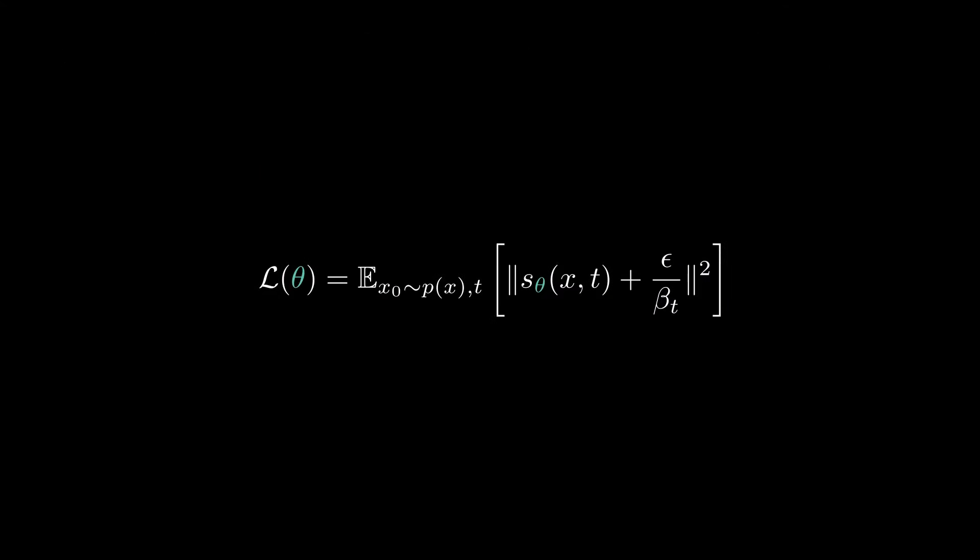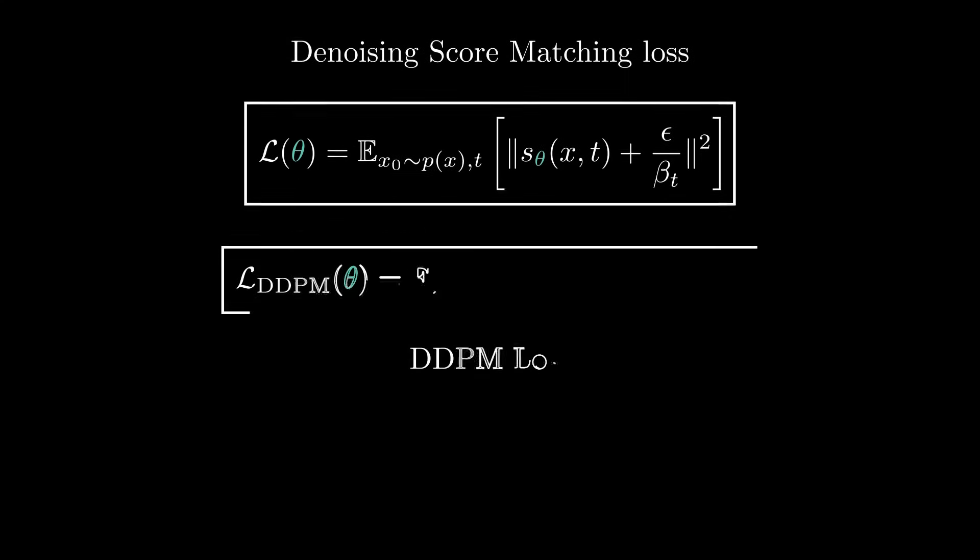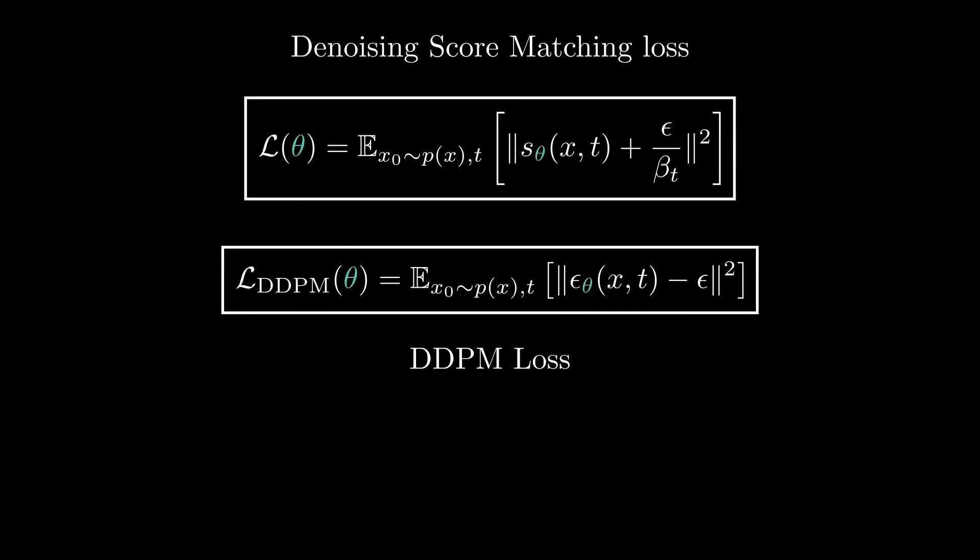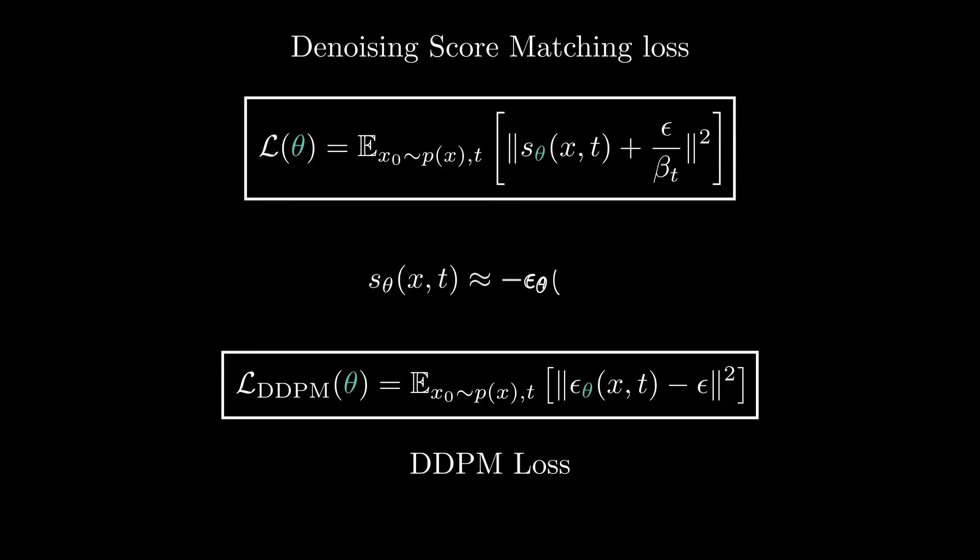When we plug this into the loss, we have a training objective that is very similar to the DDPM training loss. However, if we take a quick look at both losses at the same time, you can see that in one case there's a minus between the network's output and the noise, and in the other there's a plus. This is just because both networks learn two different things. In DDPM, the network learns to remove noise, while here the network learns the score of the corrupted data distribution. In fact, the way these networks are expressed make them approximately opposites, but both can be used to generate new samples. So let's see how we do that now that we have our score estimates.